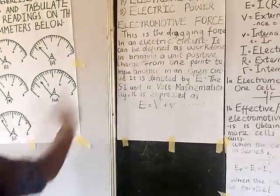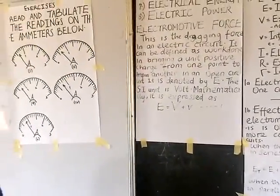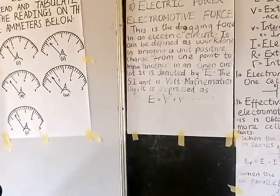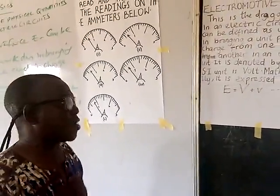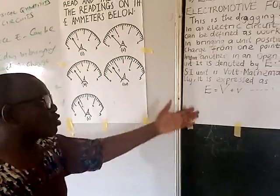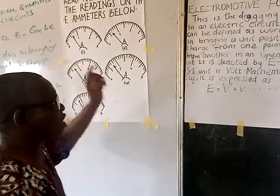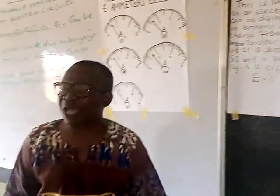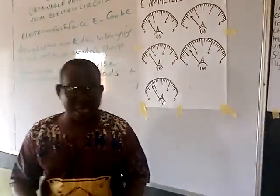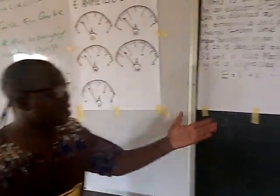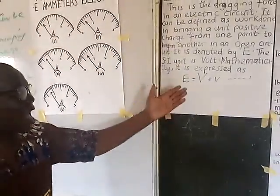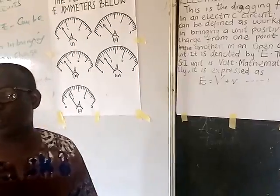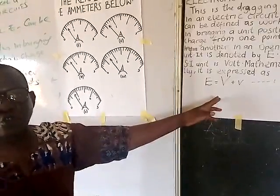Electromotive force can also be referred to as the dragging force — it is the force that drags the current. Mathematically, electromotive force is denoted by E.